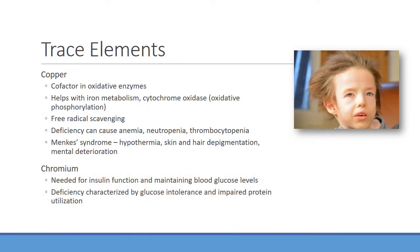Next on the list of trace elements is copper, which is an important factor in certain oxidative enzymes. One place copper is used is with cytochrome oxidase, a very important enzyme used during oxidative phosphorylation — where we utilize oxygen to make ATP. Copper is also useful for iron metabolism and can help with free radical scavenging, helping to reduce reactive oxygen species that can denature proteins or damage DNA. Deficiency can cause anemia, neutropenia, and thrombocytopenia.